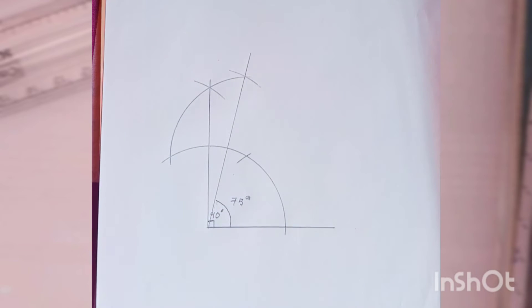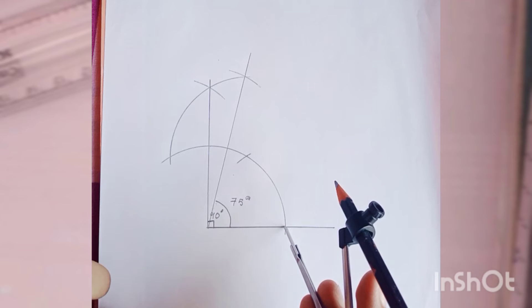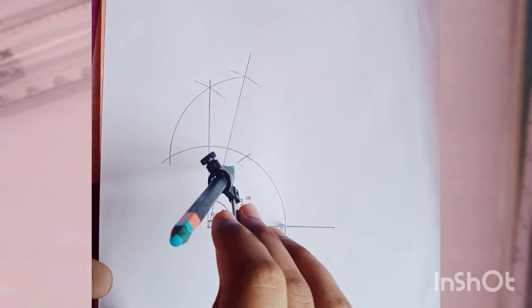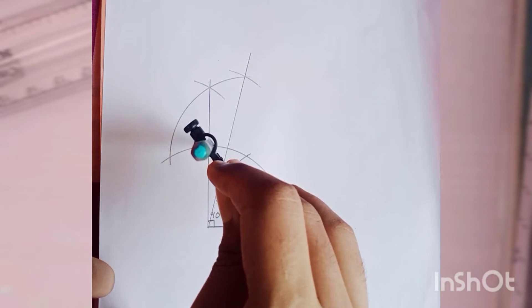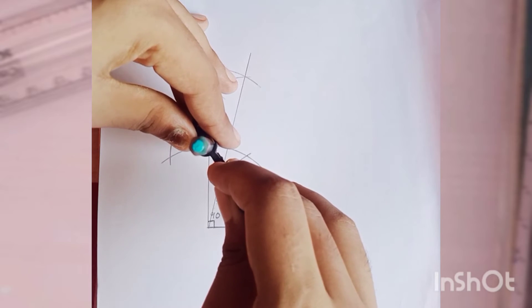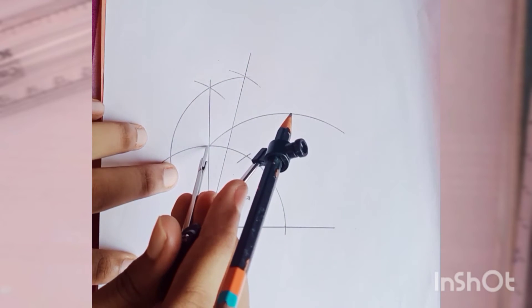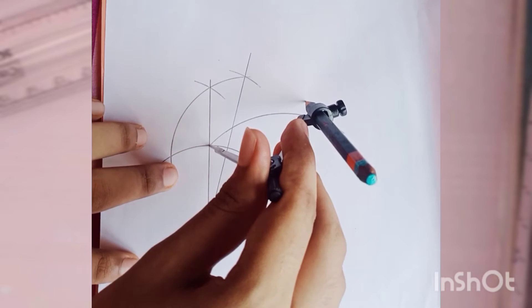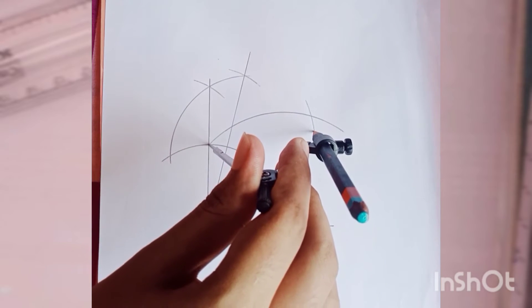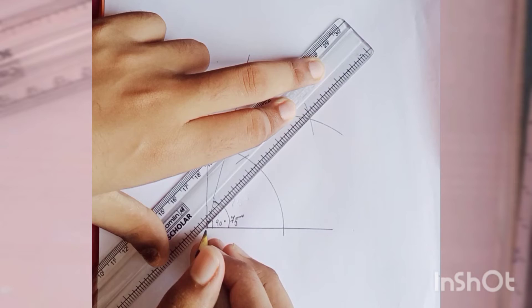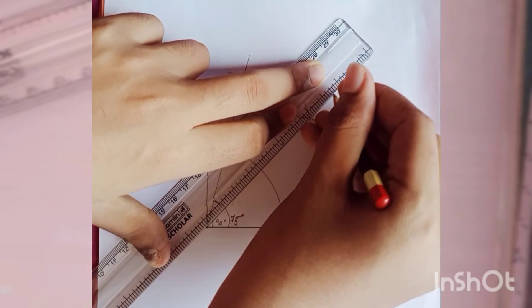Now you can make 45 degrees also. For 45 degrees you have to take the whole measurement from here. From this side cut an arc like this, then keep the needle here and cut an arc here. Now we draw a line from this point passing 45 degrees.